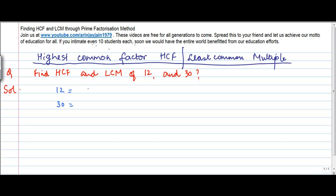So 12 can be written as 2 × 2 × 3 or 2² × 3. 30 can be written as 2 × 3 × 5, or 2¹ × 3¹ × 5¹.